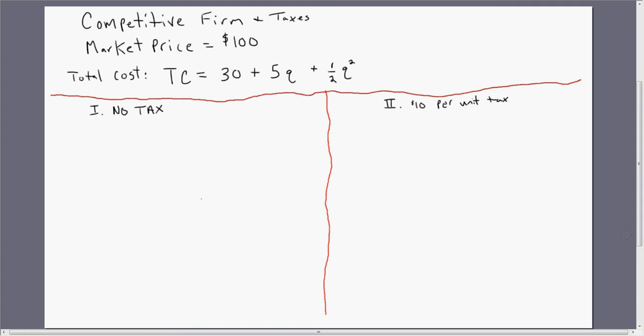We're going to compare and contrast two cases. We're going to look at the case where there are no taxes first, and then the case where there is a $10 per unit tax. Let's start with the no-tax case.